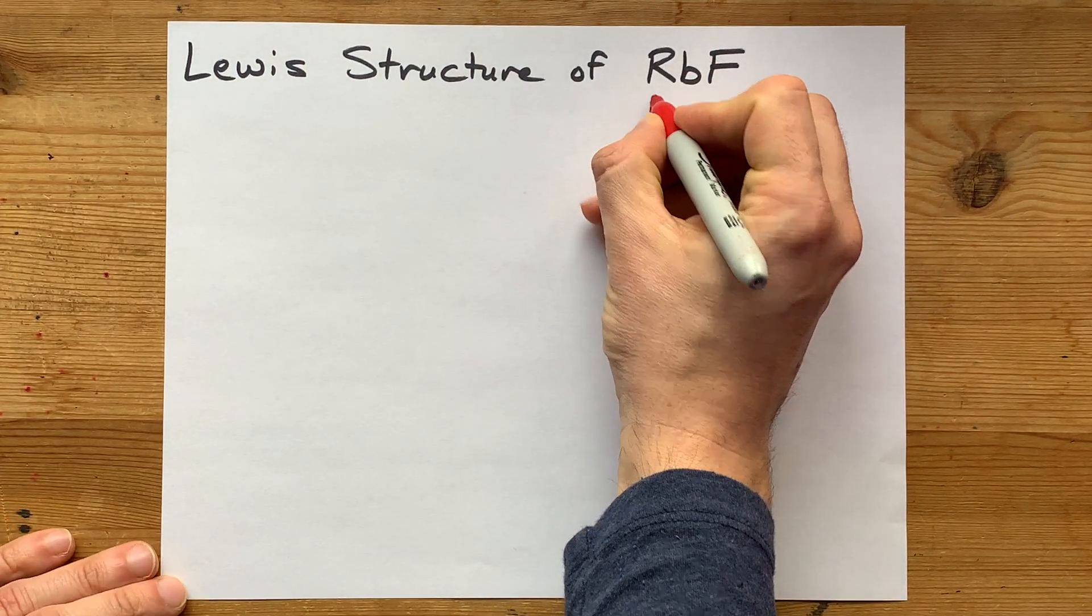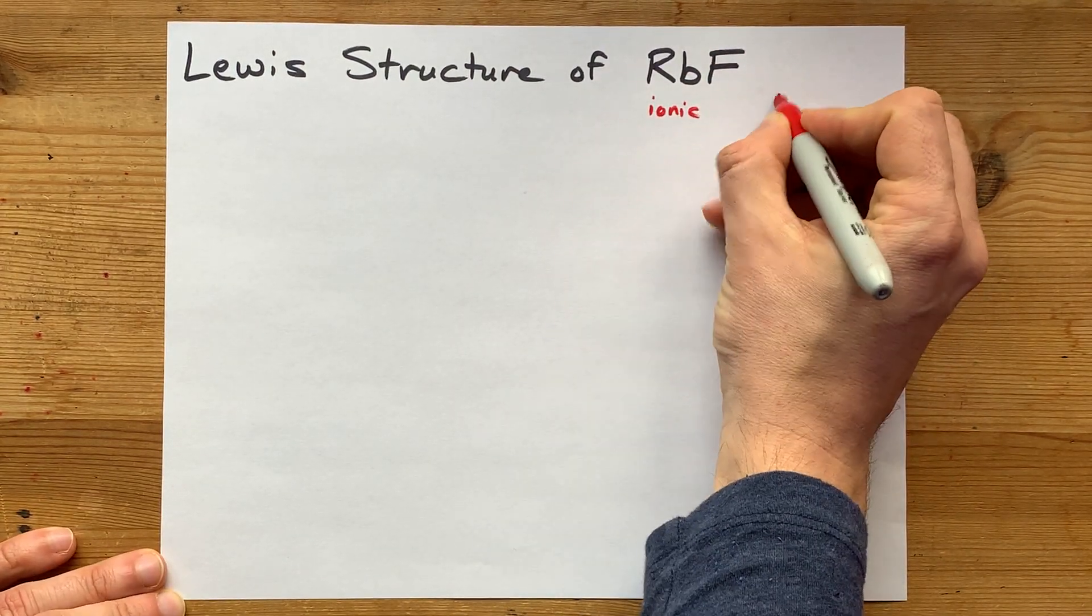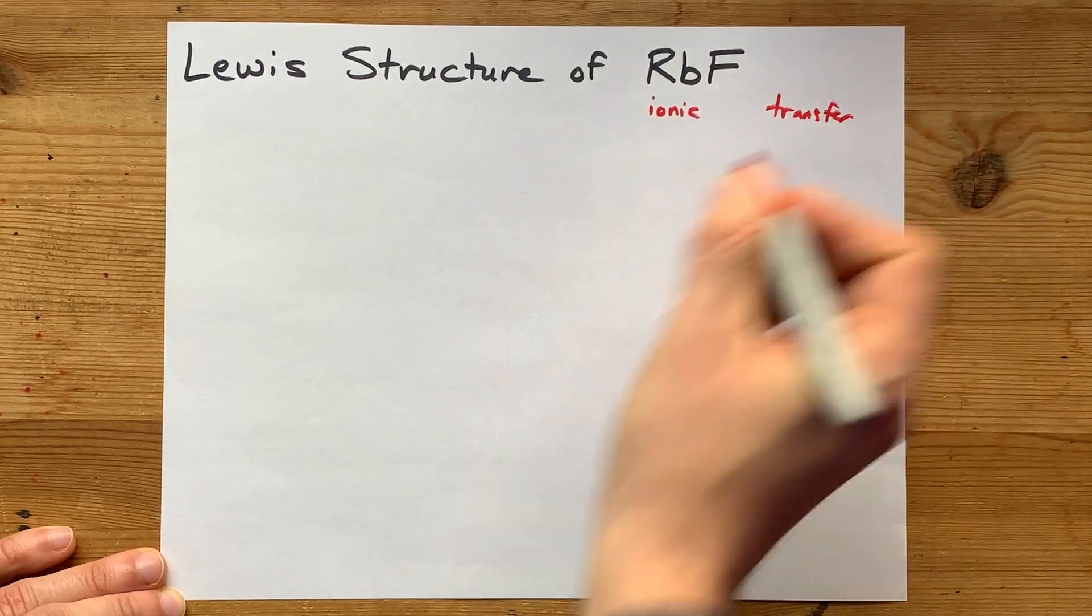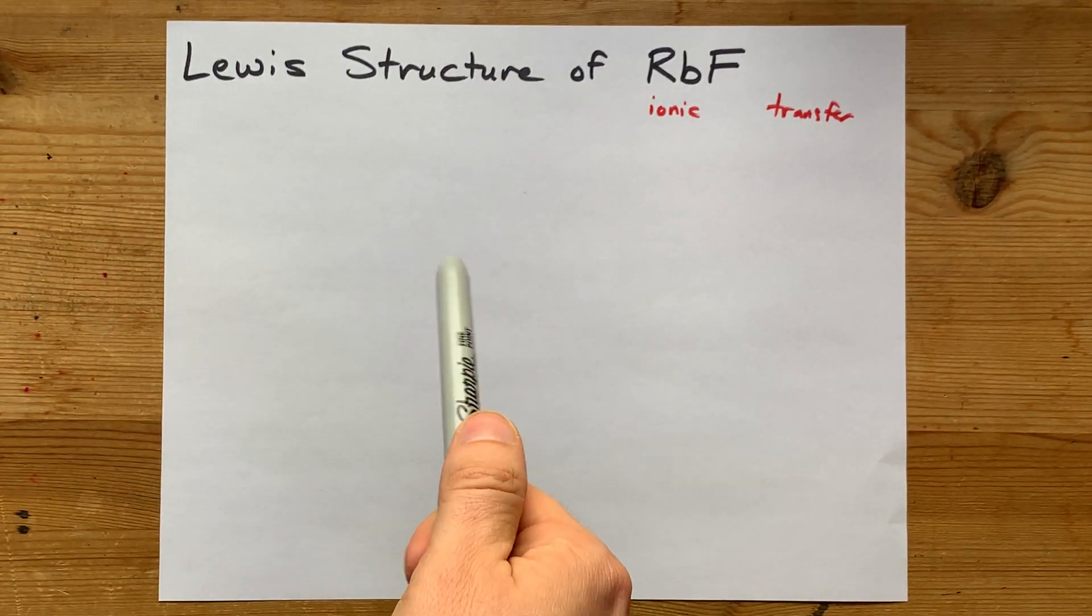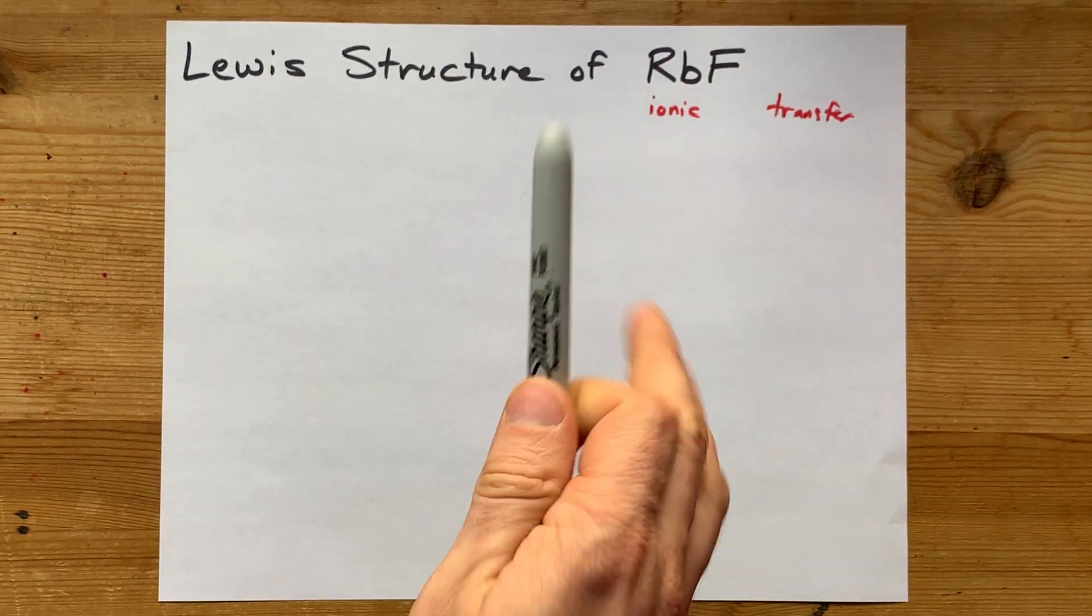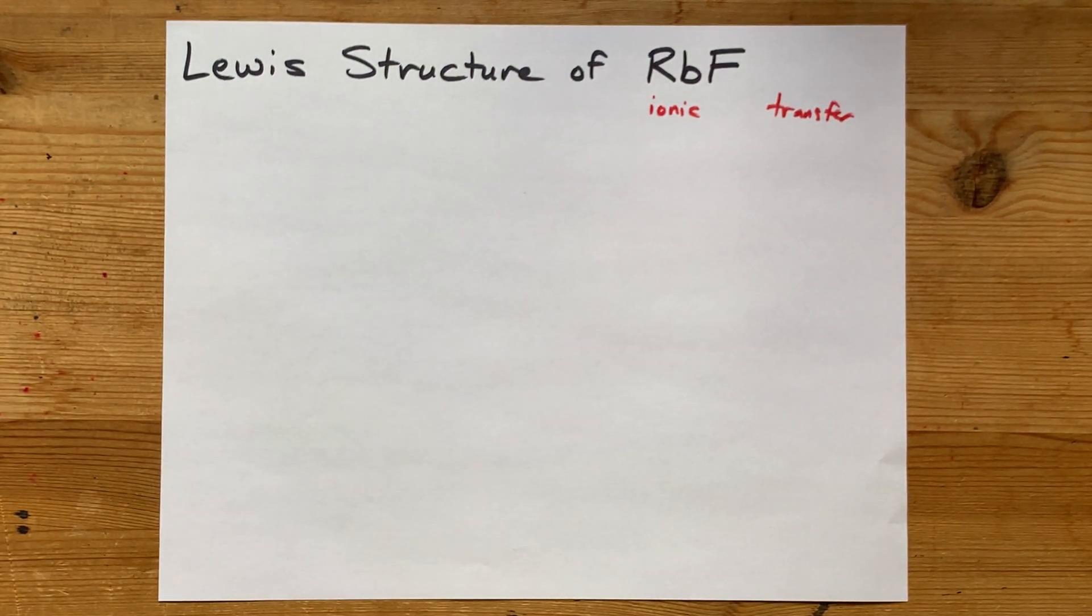Metals plus non-metals make ionic compounds, which means there's going to be a transfer of electrons. The metals will give their electrons up to the non-metals. You want to watch that happen?